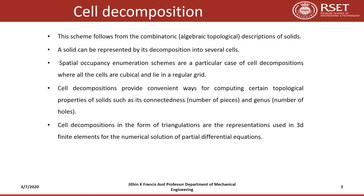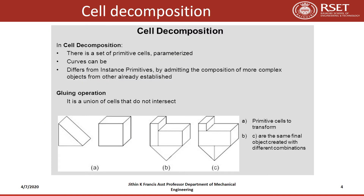Cell decomposition is another form of solid modeling in which objects are represented as a collection of arbitrarily shaped 3D primitives. Individual cells can be defined as a set of parameterized cells which can have even curved boundary surfaces. These differ from instanced primitives by admitting composition of more complex objects from already established ones.